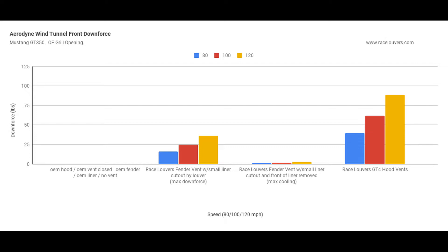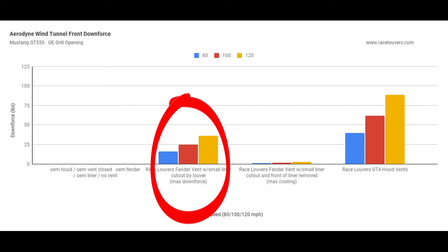For maximum downforce setup, we leave the liner, cut a small hole in it for the louver, and then we get about 25 pounds of downforce at 100 miles an hour.